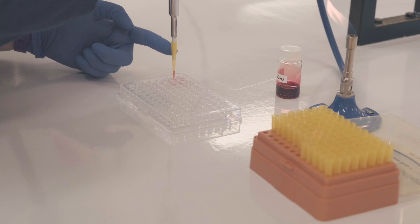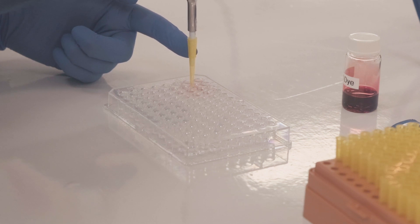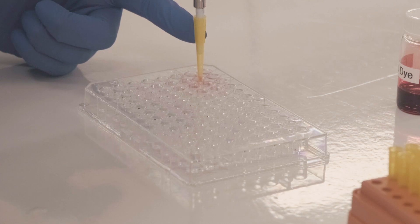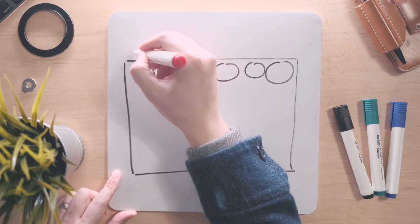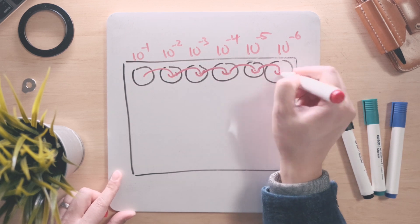When you're convinced that the first dilution is homogenized, remove 10 microliters from this well and pipette this into the second well, which also contains 90 microliters. This is the second 1 in 10 dilution, and now this well has 100 microliters of reaction volume. Thoroughly mix again by pipetting up and down. We'll repeat this process until we have performed six 1 in 10 serial dilutions.